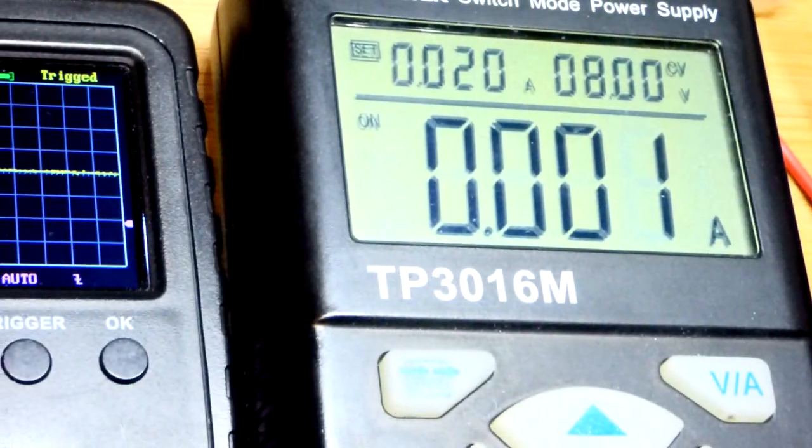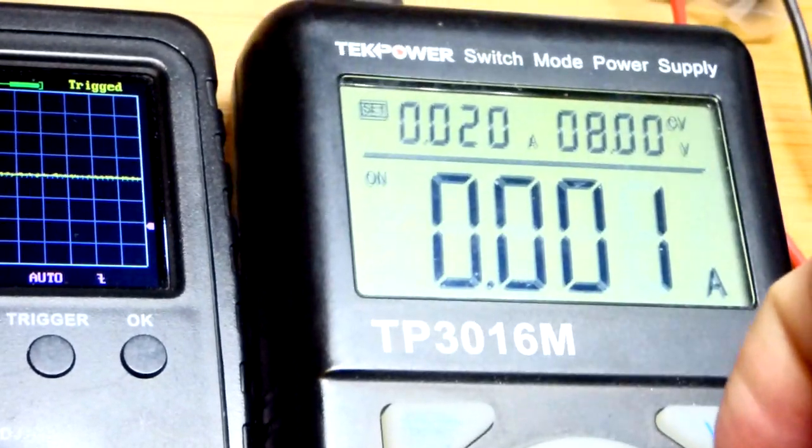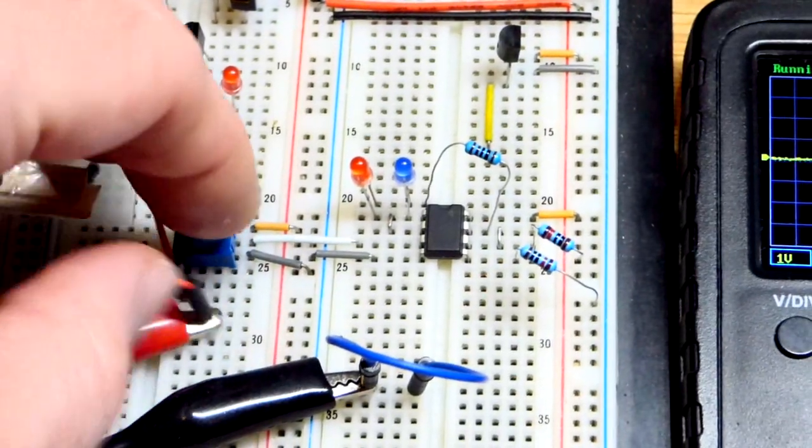We'll look at that. We have 8 volts there, and I limited current to 20 milliamps just in case I short circuit something. It won't fry. Only 20 milliamps of current can flow through it.